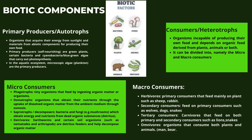Next are the consumers or heterotrophs — organisms incapable of producing their own food that depend on organic food derived from plants, animals, or both. They are divided into micro and macro consumers. Microconsumers include phagotrophs, which are tiny organisms that feed by ingesting organic matter or organisms. Osmotrophs obtain nutrients through the uptake of dissolved organic matter from the ambient medium through osmosis. Saprotrophs, also known as decomposers — bacteria and fungi such as mushrooms — obtain energy and nutrients from dead organic substances. Finally, detritivores such as earthworms and certain soil organisms such as nematodes and arthropods are detritus feeders and help decompose organic matter.